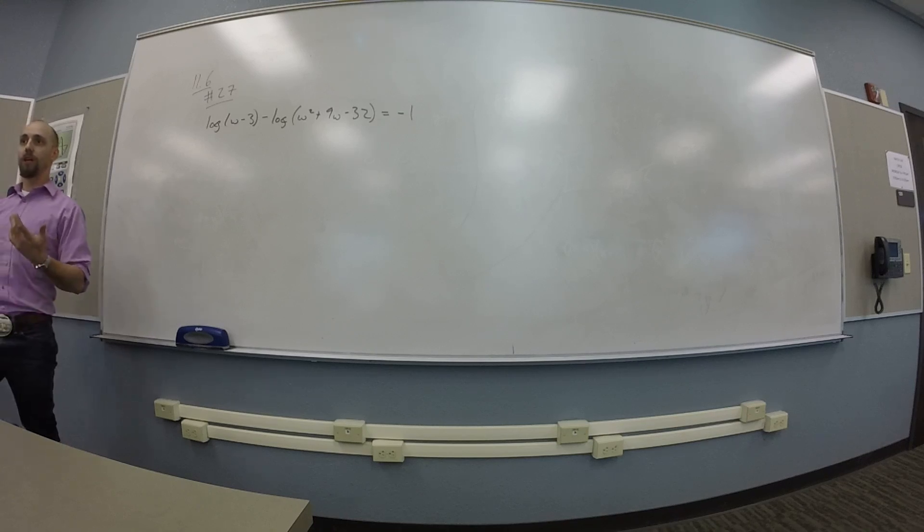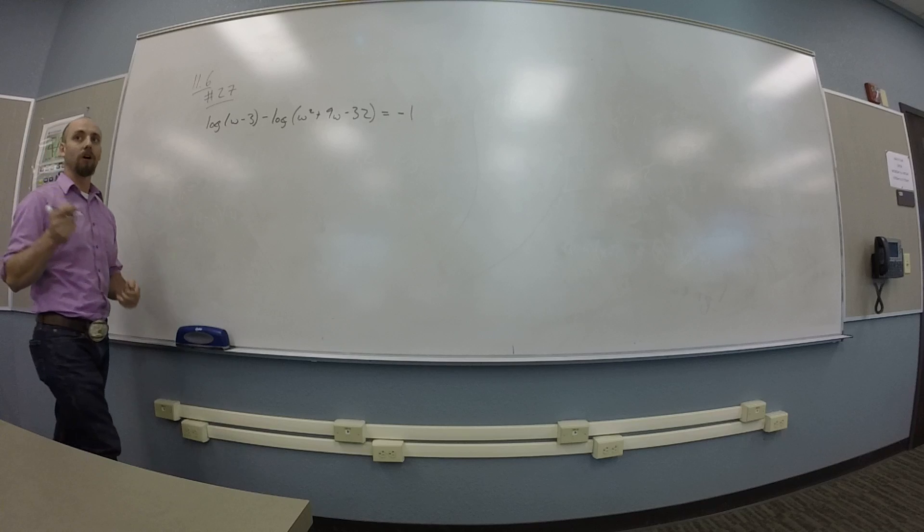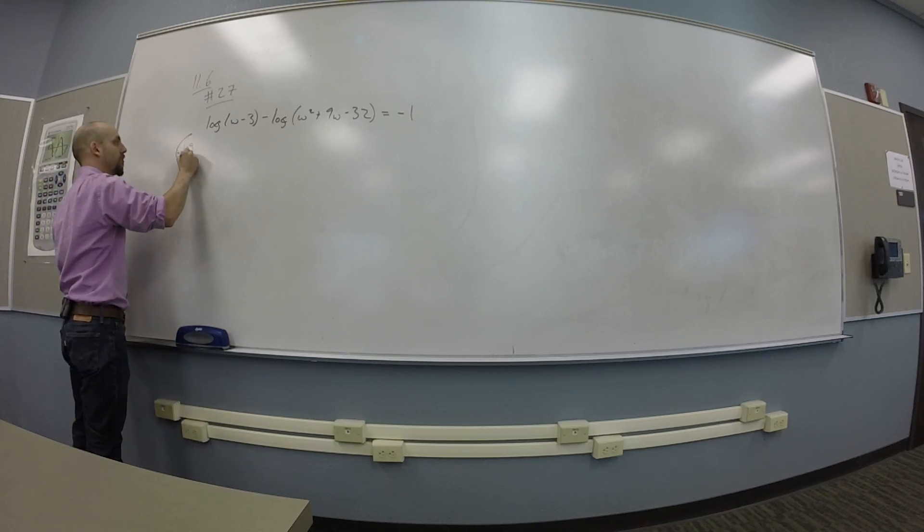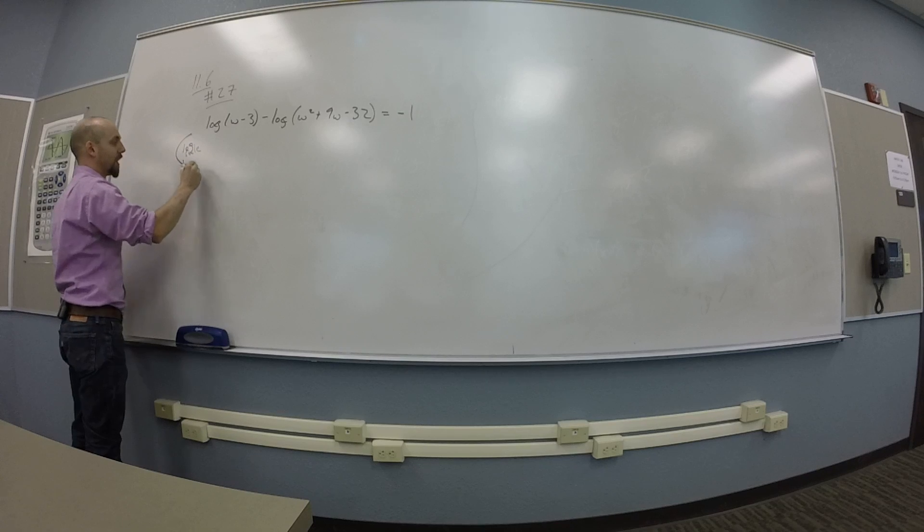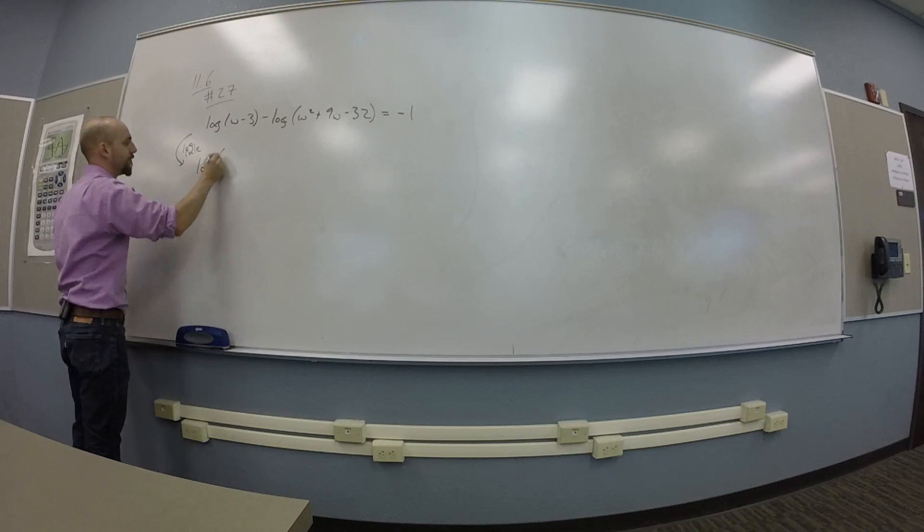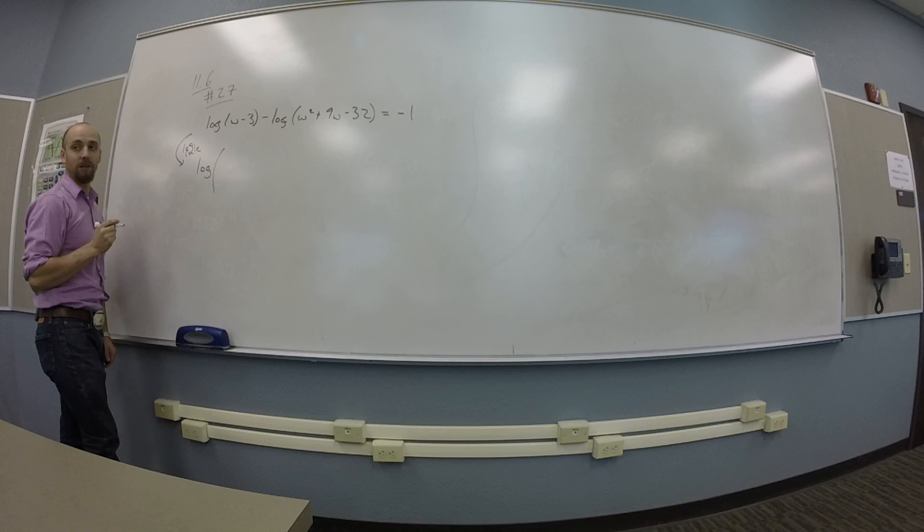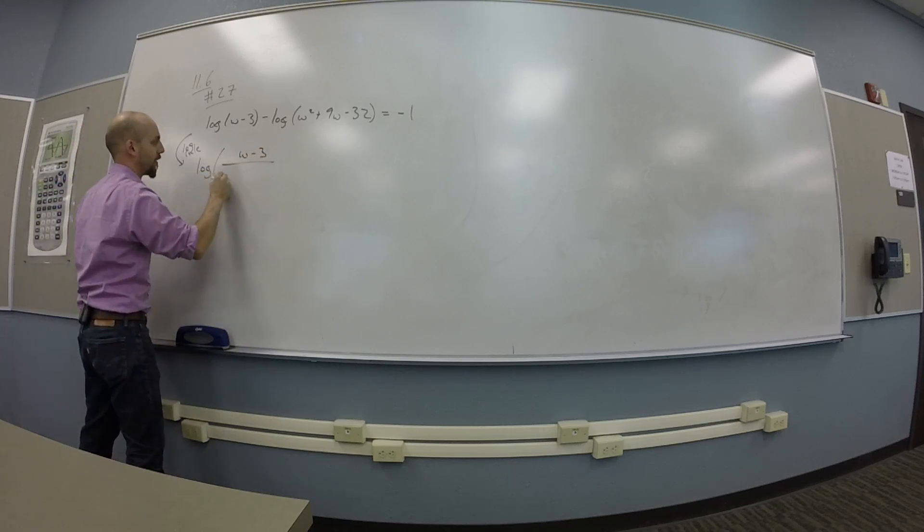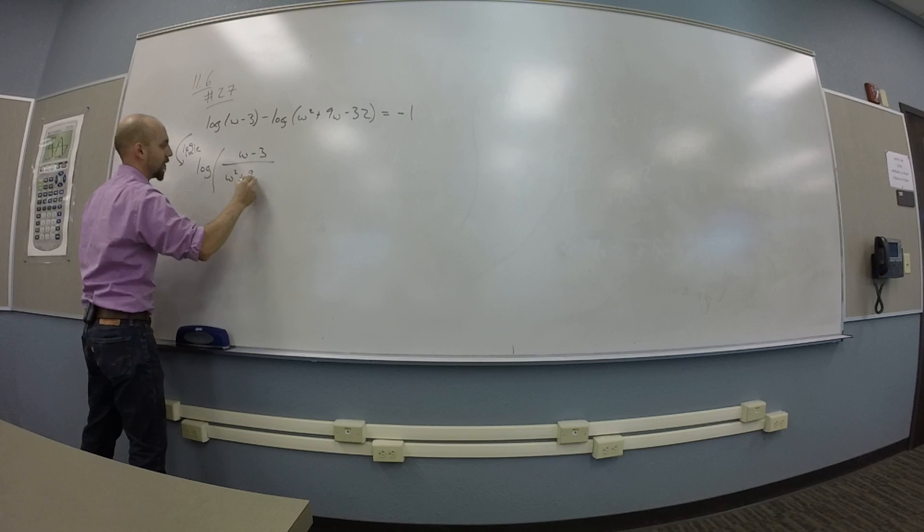Deposit. Yeah, I'm using the difference of some logs is the log of the fraction. Okay, so there's a log rule, right? And I'm getting log of what? W minus 3 over the W squared plus 9W minus 32.